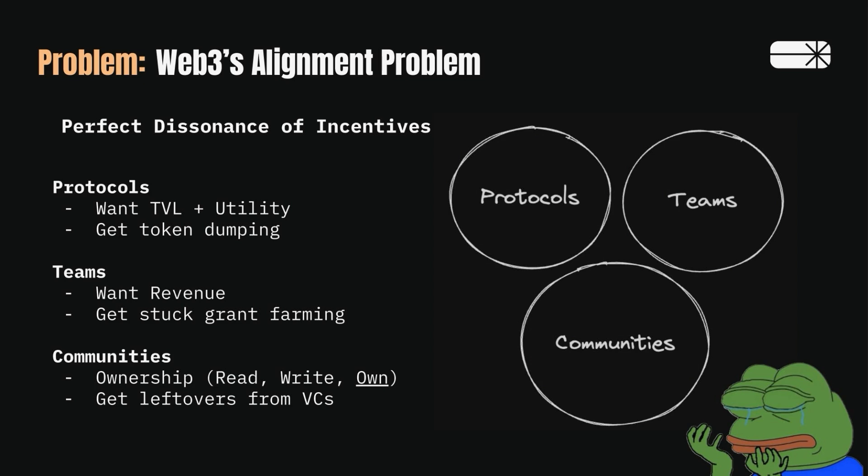Teams want revenue — they're not in the game of chasing grants, they're in the game of building something interesting. Instead of revenue, they're forced every couple of months to go find more grants. They're basically in a hostage negotiation where they go to each chain and say, hey, we'll deploy on you, but you've got to give us something because this is the only way we survive. And the third stakeholder, often overlooked, is communities. Communities want ownership — this is the overarching promise of Web3. And what do they get instead? They pray for an airdrop. When you do get the airdrop, the VCs got it first and you're most likely exit liquidity, because the VCs got it on a simple agreement for future tokens. This is the alignment — as in there is no alignment. These three circles are not overlapping at all.